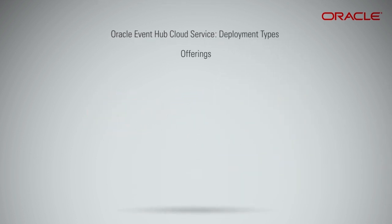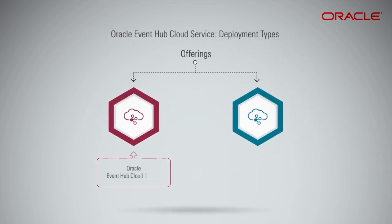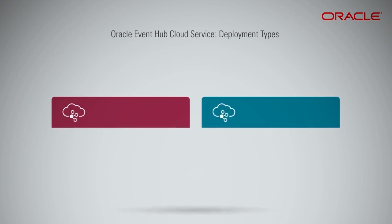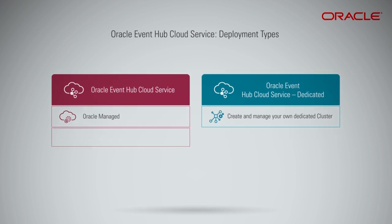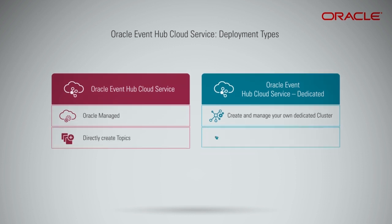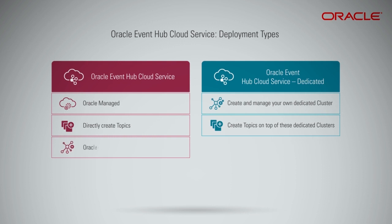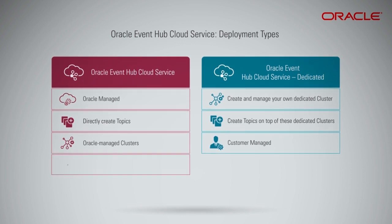Oracle offers two different deployment types for Oracle Event Hub Cloud Service: Oracle Event Hub Cloud Service, and Oracle Event Hub Cloud Service Dedicated. Oracle Event Hub Cloud Service is Oracle-managed. You could opt to create and manage your own dedicated cluster by using Oracle Event Hub Cloud Service Dedicated. You can directly create topics here; you need to create a cluster first and then create topics on top of these dedicated clusters. The underlying cluster is created and managed by Oracle. This deployment mode is customer-managed. This cluster could be shared among multiple customers.